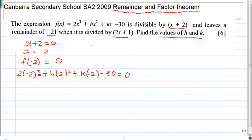Minus 2 cubed is equals to minus 8. Minus 8 times 2 is equal to minus 16. This term can be simplified. Minus 2 squared is 4, so 4h. K times minus 2 is minus 2k minus 30 is equals to 0. Now what I have is 4h minus 2k minus 16 minus 30 equals to minus 46 equals to 0. So 4h minus 2k equals to 46.